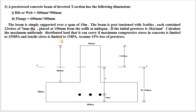Tensile stress is limited to 1 MPa. Assume 15% loss of pre-stress. Since no figure is given, we draw the T-section from the data. The web is 300 by 900, the flange width is 600 and depth is 300 mm. It is a simply supported beam with a span of 15 meters.